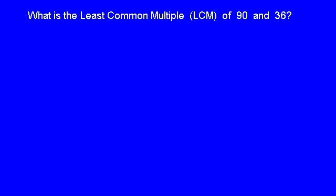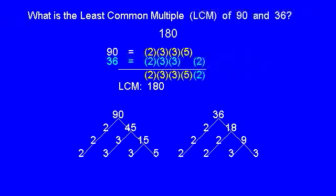As another example, what is the least common multiple of ninety and thirty-six? It's one eighty. If we factor ninety into primes we get a two, two threes, and a five. Thirty-six factors into two twos and two threes. To be a multiple of ninety we need these in yellow. To be a multiple of thirty-six we need two twos and two threes. We already have one two and two threes, so we only need to add a two to be a multiple of thirty-six. If we multiply those together we get a least common multiple of one eighty.